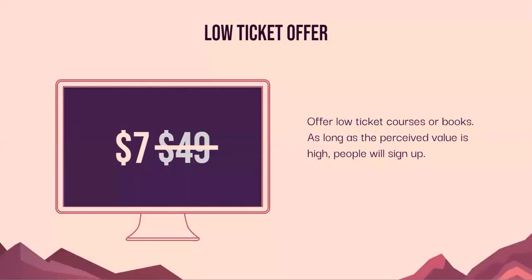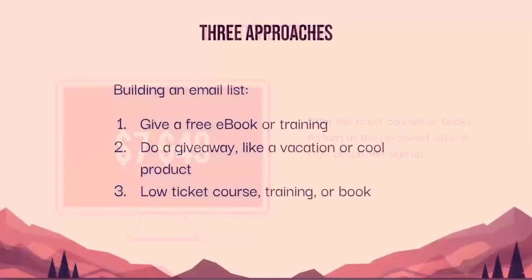The third way to build an email list is to offer really low ticket products — you can sell something for around $7, lots of people will buy it, and you get lots of email addresses. So there are three different ways: the massive giveaway approach that lasts for a long period and can build a very large list; smaller lead magnets like a free ebook or free newsletter; or a low ticket offer that builds your list quickly because many people will buy it.